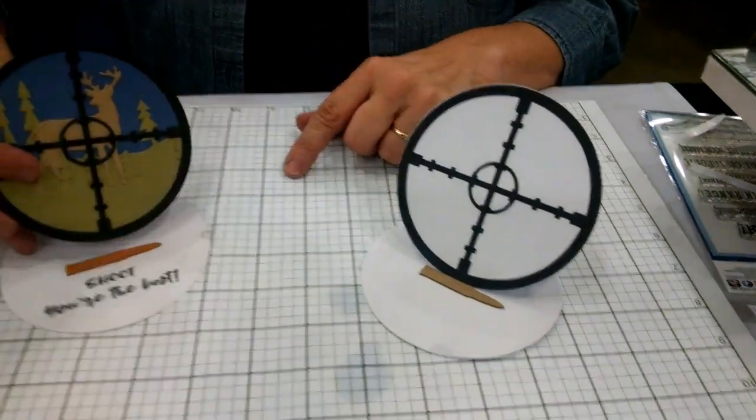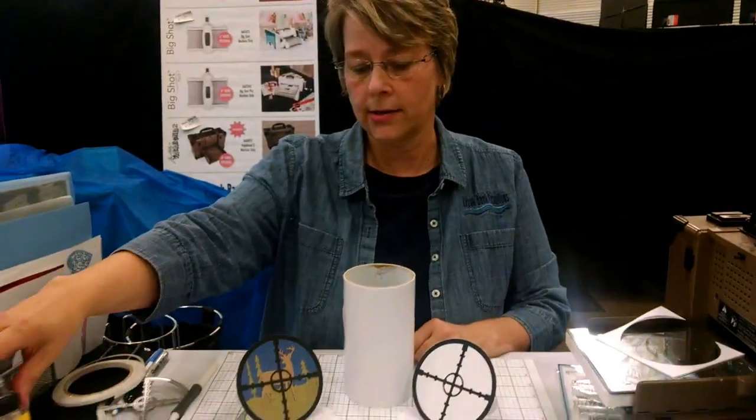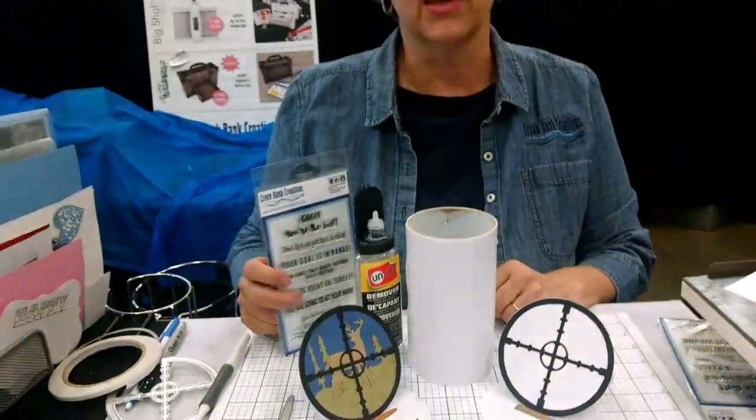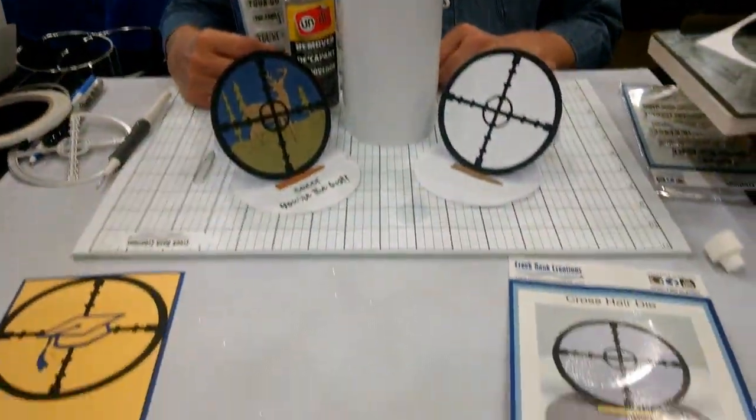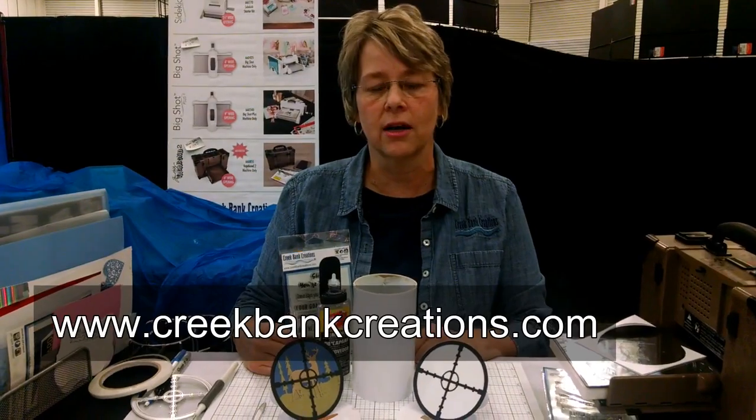So that is how to use the shooter die. You need Creek Bank creation super tacky tape and some undo, and you have an awesome thing to give to the hunter in your life. Thanks for stopping in today, you can find these products on our website at www.creekbankcreations.com.